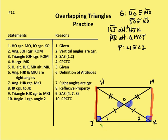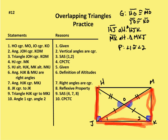I also know that JK is congruent to itself. So now I have a side, an angle, and a side — side-angle-side. I have two congruent triangles: HJK and MKJ, congruent by side-angle-side. Now I can say that angle 1 is congruent to angle 2 by CPCTC. And I'm done with the proof.